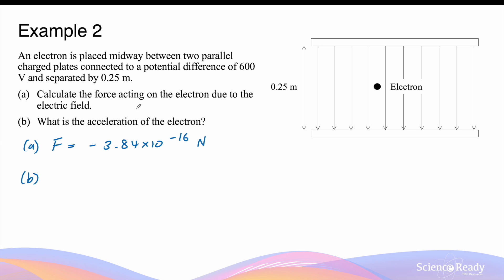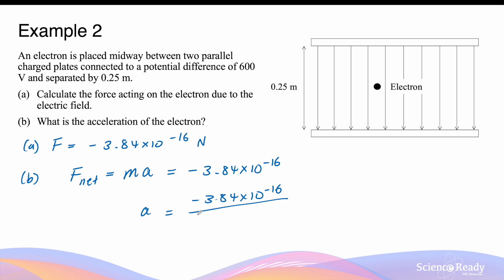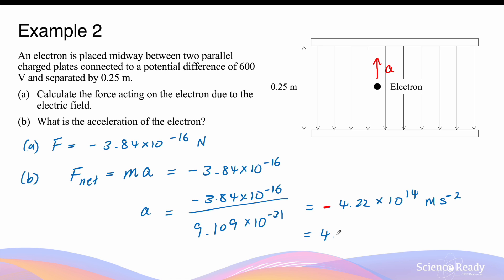What is the acceleration of the electron? Assuming the electric force is the only force acting, Newton's second law gives: ma = F, so a = F/m = (−3.84 × 10⁻¹⁶ N) / (9.109 × 10⁻³¹ kg) = −4.22 × 10¹⁴ m/s². Since acceleration is a vector quantity in the same direction as the net force, the negative sign indicates the electron accelerates upward. The final answer is 4.22 × 10¹⁴ m/s² towards the positive plate.